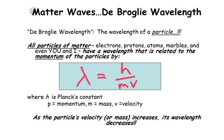Matter waves, the de Broglie wavelength. The de Broglie wavelength is the wavelength of a particle. All particles of matter—electrons, protons, atoms, marbles, and even you and I—have a wavelength that is related to the momentum of the particles by, well, there's lambda,